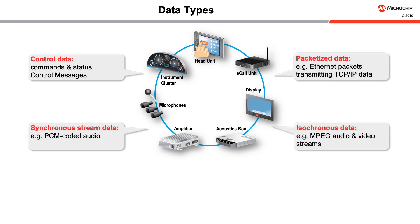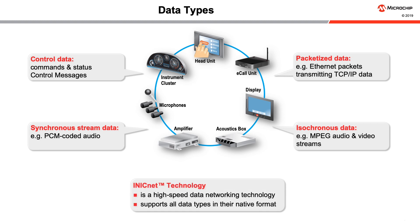Isochronous data is streaming data that is not synchronized to the network. Isochronous data streams typically have variable bandwidth needs, such as compressed video streams coming from a TV tuner, a head unit, or any video source. A key advantage of iNICnet technology is its ability to support all of these data types.